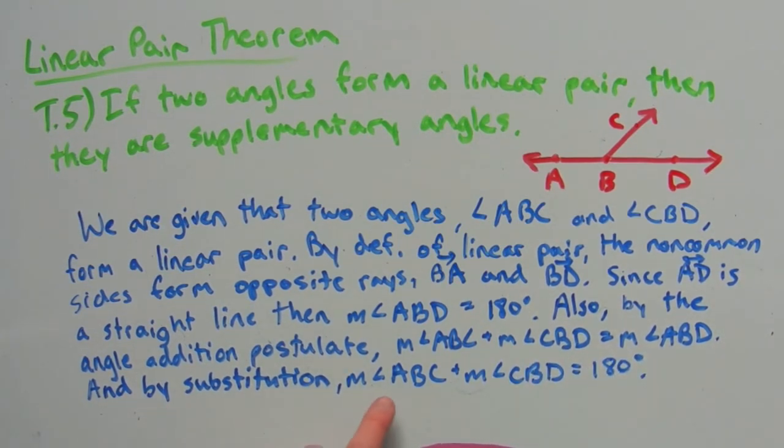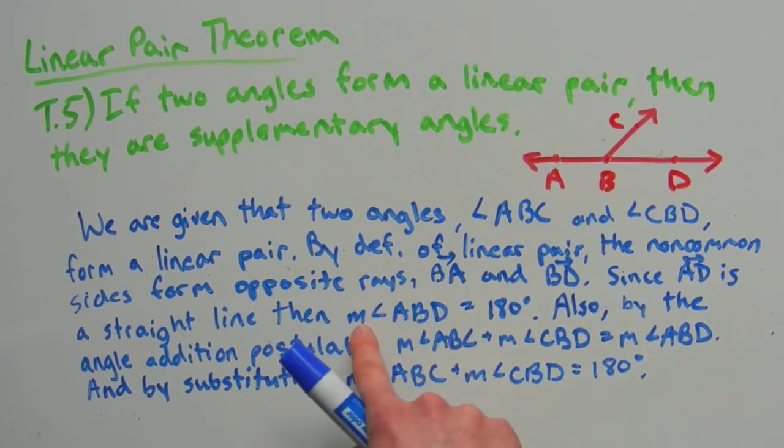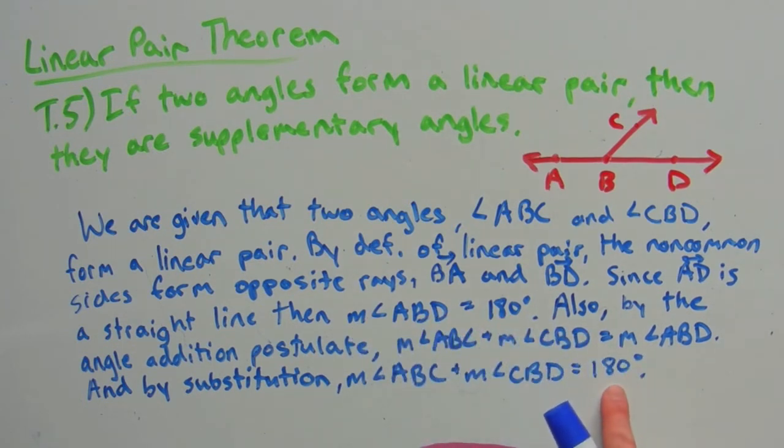And by substitution, we can say that the measure of angle ABC plus the measure of angle CBD equals 180, because we're substituting in the 180 degrees that is equal to the measure of angle ABD. So since we know they're equal, we can substitute 180 in for that measure.